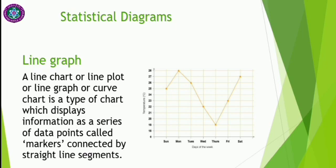There are three types of statistical diagrams. The first is the line graph. A line graph, also called a line chart or curve chart, is a type of chart which displays information as a series of data points called markers, connected by straight line segments. It is often used to show how things change over time, and in geography it can be used for variation in temperature, rainfall, population, production, or trade over a period of time.